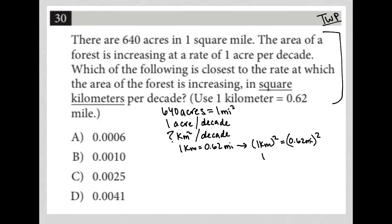What I get is that 1 km squared is equal to, putting this on my calculator, 0.3844 miles squared. And that's going to be more useful for me.